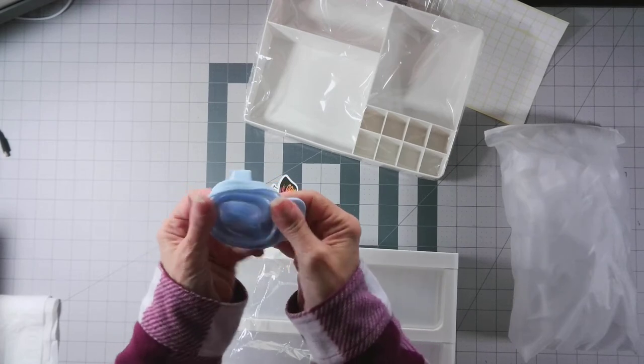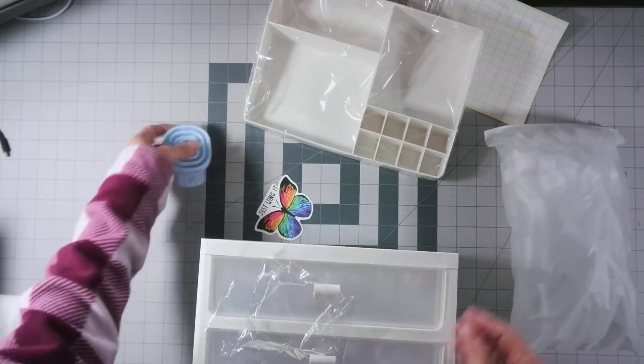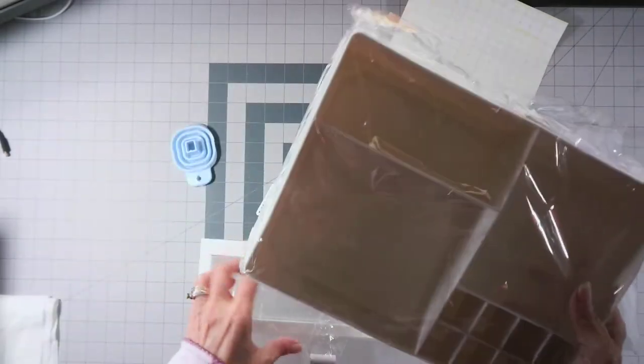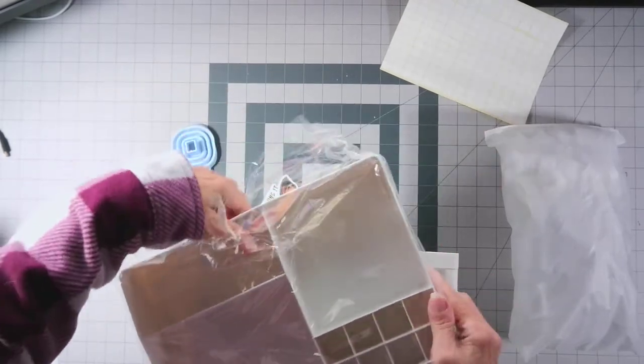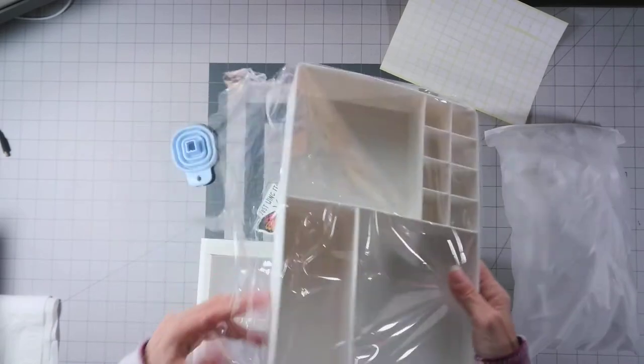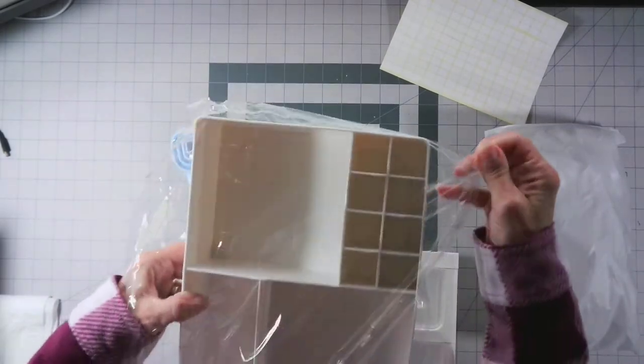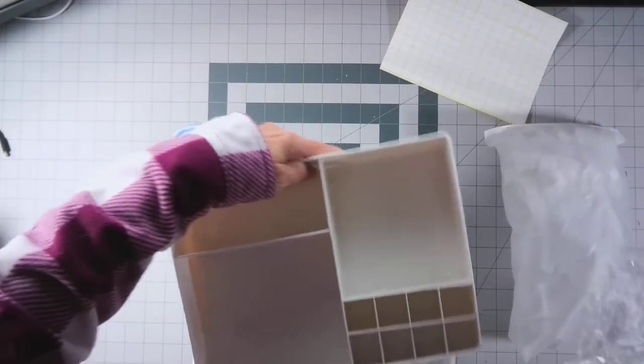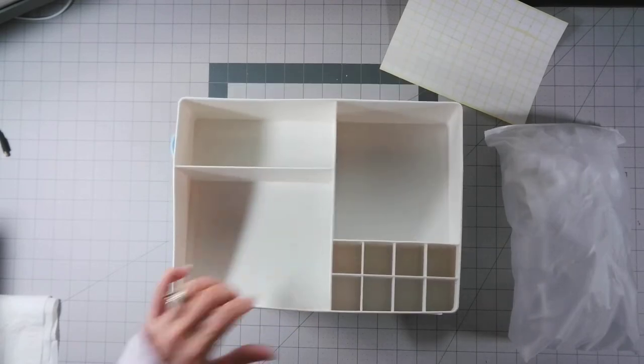And what you do is you take and you set that in your bottle and then you pour your drills. And I like them because they collapse and they're out of the way. They're not big and bulky like a regular funnel would be and take up a whole lot of room.